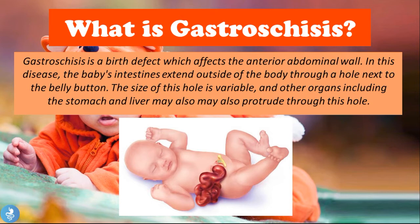Looking at the image, we see the baby's belly button and the portion of the umbilical cord still attached and clipped. Just to the right of this is a mass of abdominal content — usually found inside the body — which has broken through the anterior abdominal wall and is now outside the child's body. In gastroschisis, a variety of abdominal organs can protrude through this hole, including the intestines and the stomach.